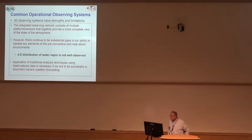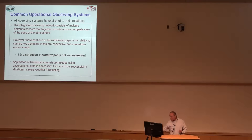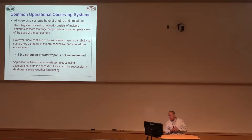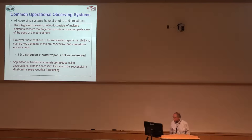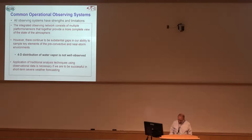Storms embedded within a certain environment — what are they moving into and how is that going to impact storm evolution? We don't really observe the four-dimensional distribution of water vapor as well as we need to. So what we have found is that we still have to apply traditional analysis techniques with the available observational data if we want to work at short-term severe weather forecasting.